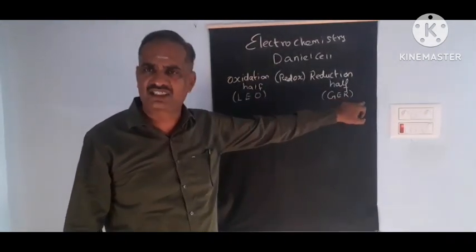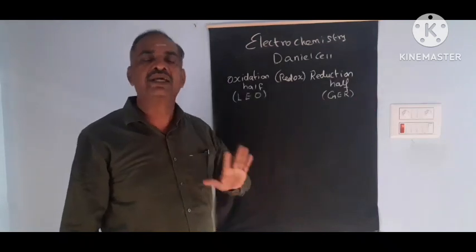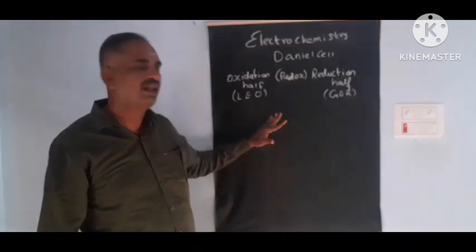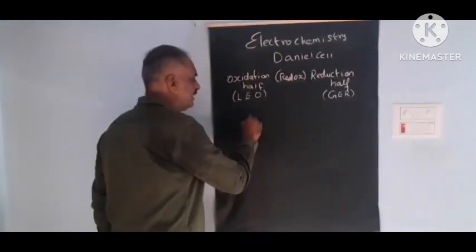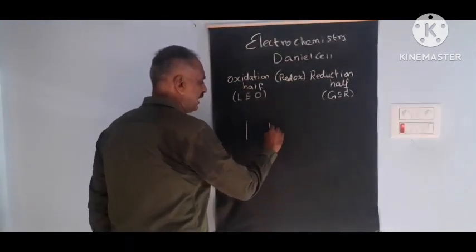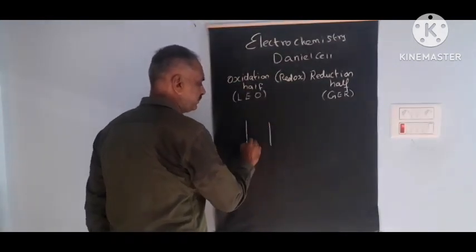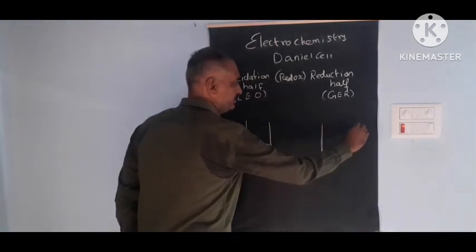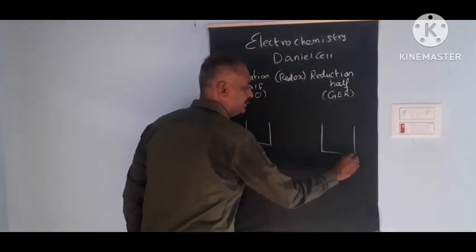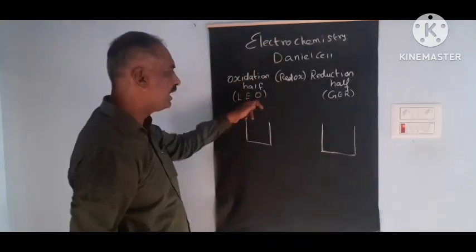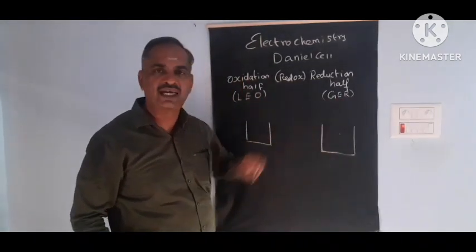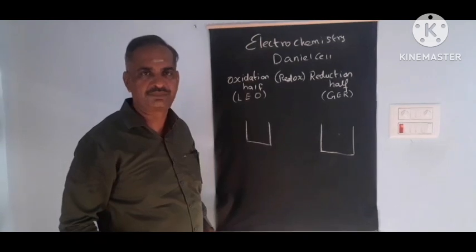Gain of electron is called reduction. So in conclusion: loss of electron is called oxidation, gain of electron is called reduction. The cell has two halves — the oxidation half and the reduction half.